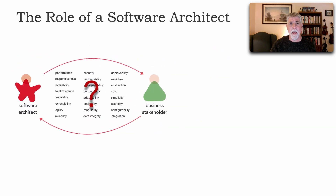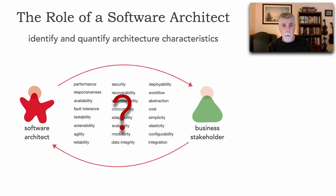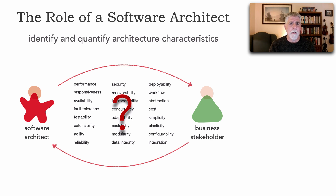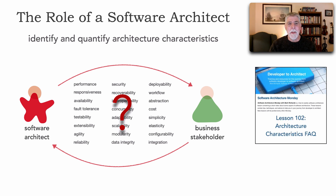The first thing an architect does is to identify, quantify, and qualify those architectural characteristics — some people call these 'ilities' or non-functional quality attributes. This requires a software architect to collaborate closely with business stakeholders, maybe the product owner or project sponsor, to determine business needs and translate those into architectural characteristics. It's also important to make sure they haven't changed since your last discussion six months or a year ago. Lesson 102 covers architecture characteristics in an FAQ format.